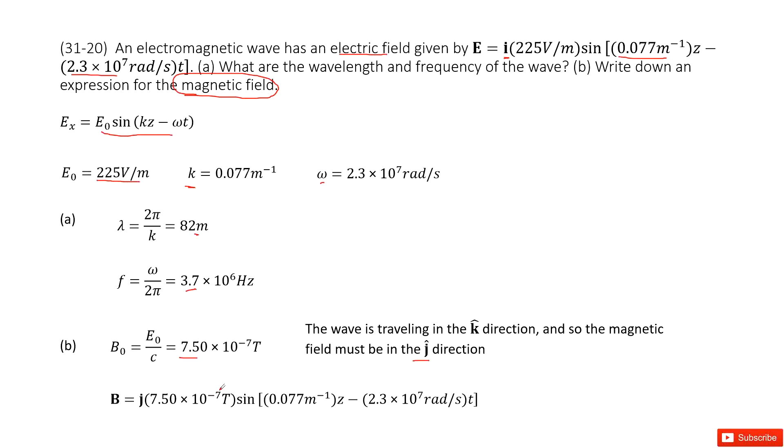Because we know E and k and M are in perpendicular directions, perpendicular relationships. So now this is j direction. Now we can write down the B expression. So this is j direction and then B naught, this is k, this is omega.